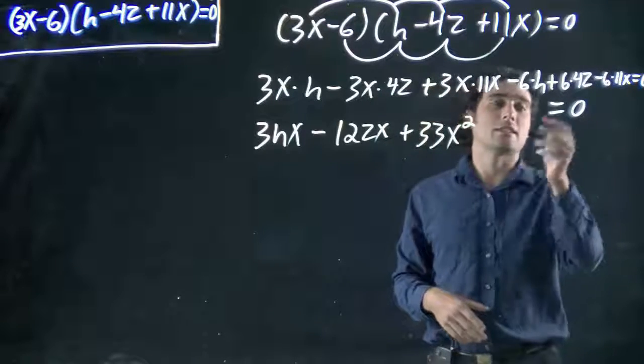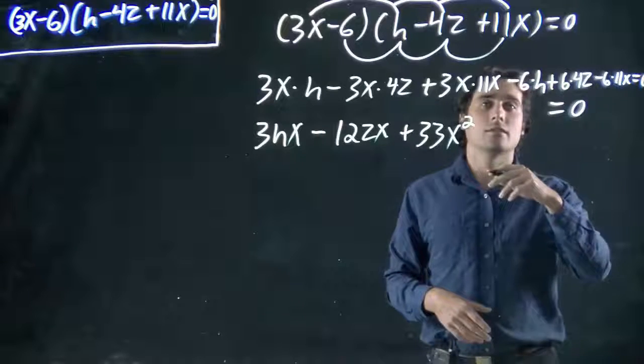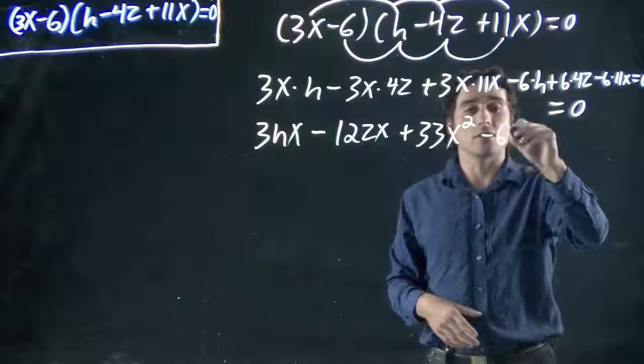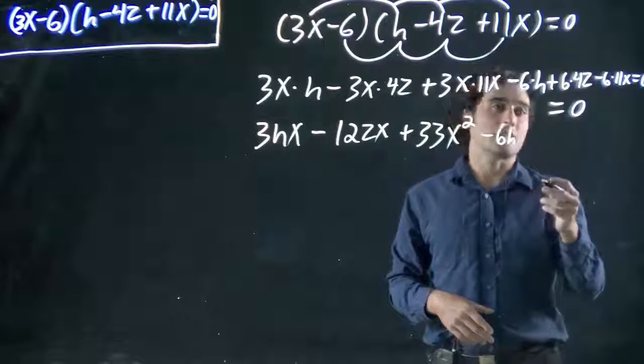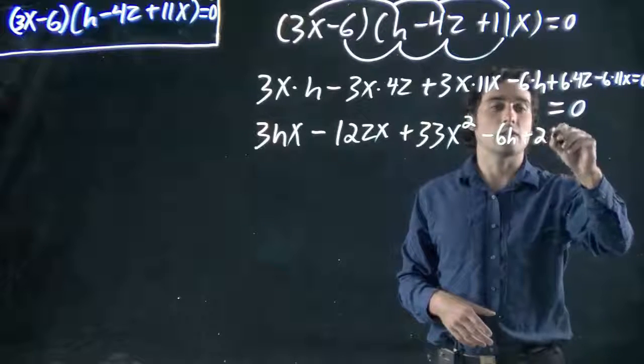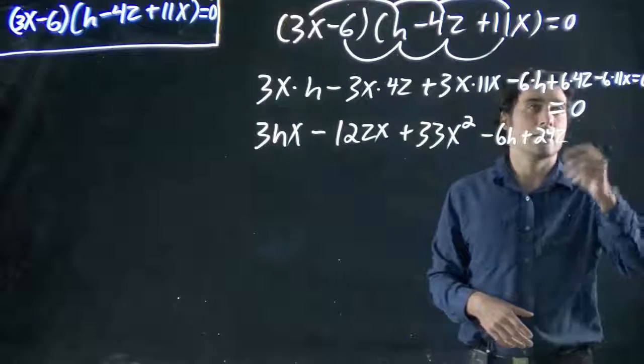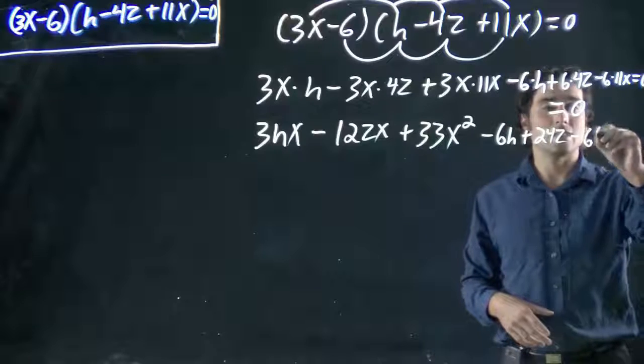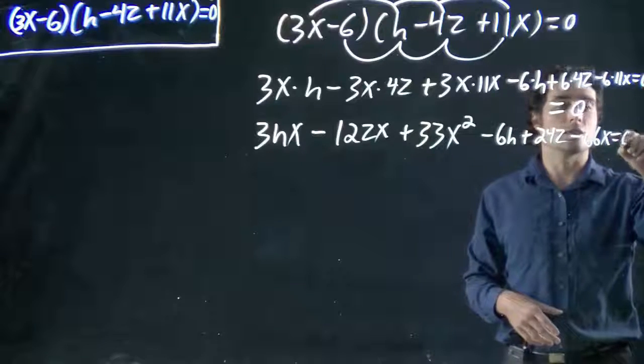And minus 6h. 6 times h, so minus 6h. 6 times 4z, so we get 24z. And then minus 66x. All equals zero.